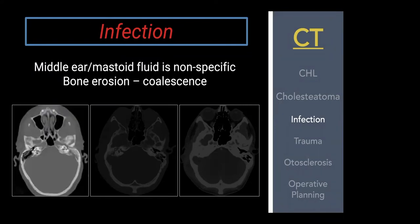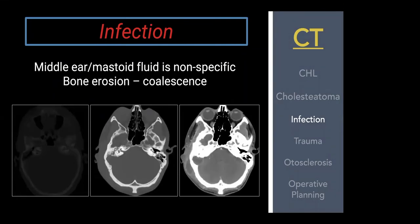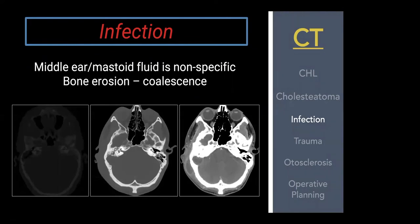On the left, the left temporal bone mastoid is completely opacified. More significantly, there is bone erosion of the mastoid septa and loss of the posterior mastoid wall — highly concerning for coalescent mastoiditis. In the middle case, on the bone window you see an erosive process in the right mastoid, and on soft tissue windows there is very low-density fluid in that area — a mastoid abscess. There's also a superficial postauricular scalp abscess. Together with bone erosion, this indicates coalescent mastoiditis that has spread extracranially.